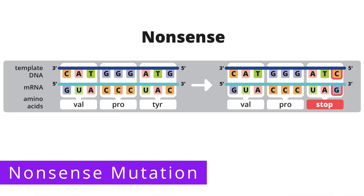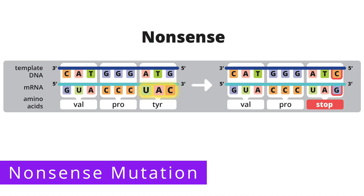We have the same template DNA, with the nucleotides CAT, GGG, and ATG. This gets transcribed into mRNA, which results in the nucleotides GUA, CCC, and UAC. Looking up these codons in the genetic code chart, we see that this sequence codes for the amino acids valine, proline, and tyrosine.